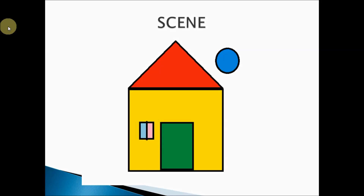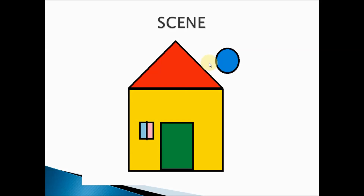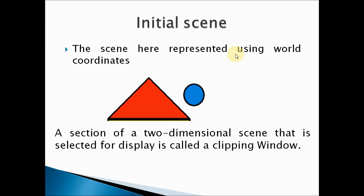Before understanding what a viewing pipeline is, you need to know what a scene is first. In computer graphics, a scene may contain many geometrical figures — for example, triangles, rectangles, squares, and circles. A computer-generated scene is nothing but a set of geometrical objects.